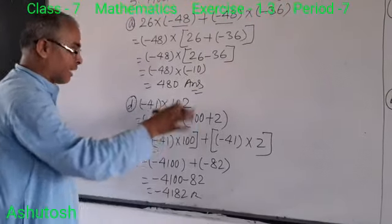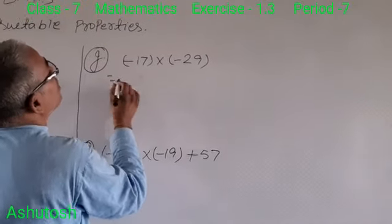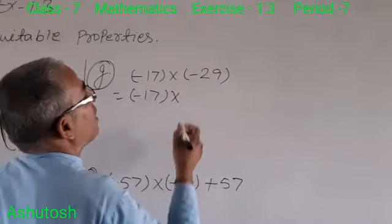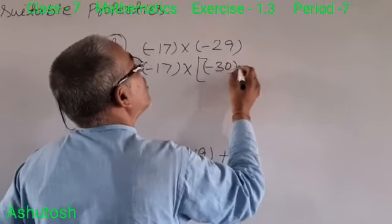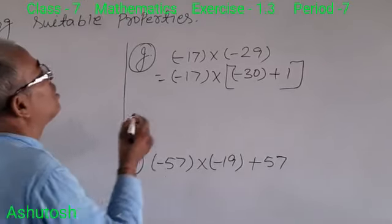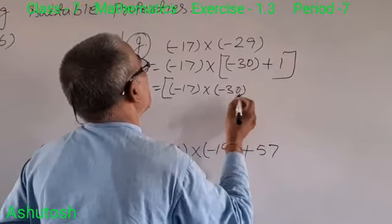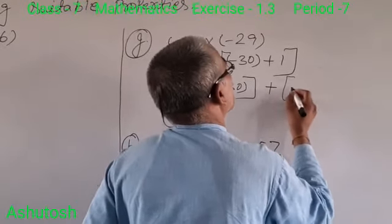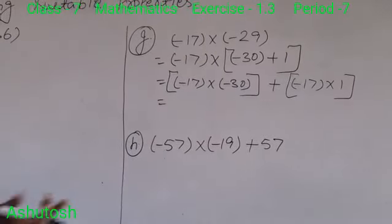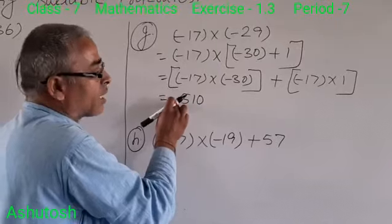Next question, question number G: minus 17 into minus 29. We write minus 29 as minus 30 plus 1, because if we add 1 to minus 30 we get minus 29. So minus 17 into (minus 30 plus 1) equals minus 17 into minus 30 plus minus 17 into 1. Minus into minus is plus, so 17 into 30 is 510, plus minus 17 into 1 equals minus 17. Therefore 510 minus 17 equals 493.